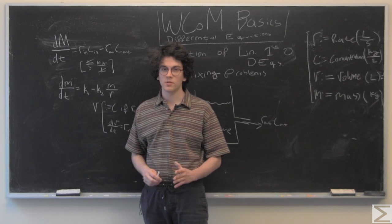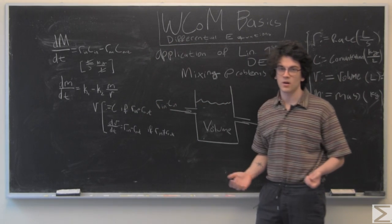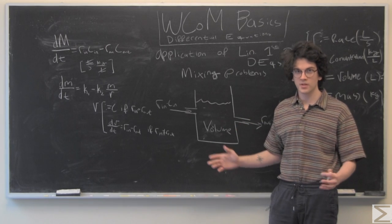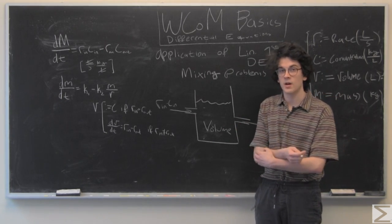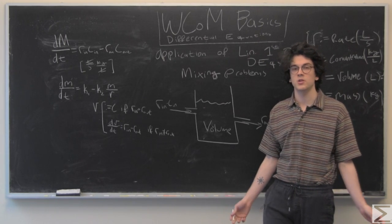So, dm dt is equal to k1 minus k2 times mass over volume. And one thing to note with the volume of the tank is that it might not always be constant. So, if stuff is coming in at the same rate it's going out, then that's fine. Volume is just whatever you're given initially.